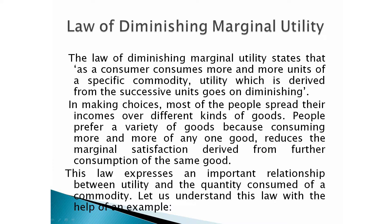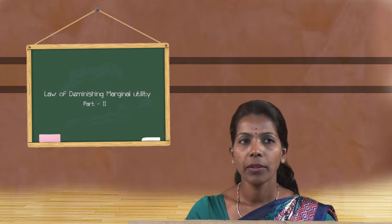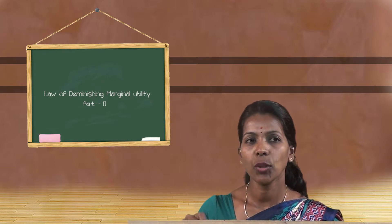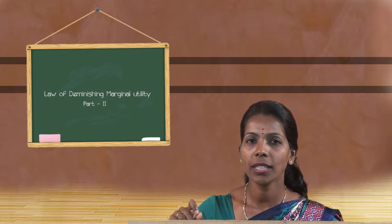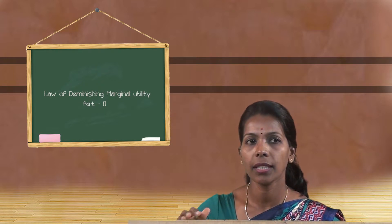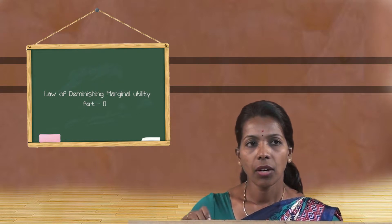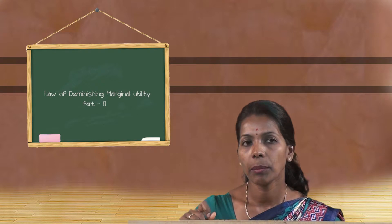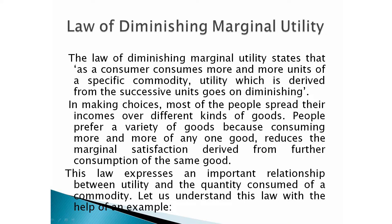The law of diminishing marginal utility states that as a consumer consumes more and more units of a specific commodity, the utility derived from successive units goes on diminishing. Most people spread their incomes over different kinds of goods and prefer a variety because consuming more and more of any one good reduces the marginal satisfaction derived from further consumption of that same good. This law expresses an important relationship between utility and the quantity consumed of a commodity.